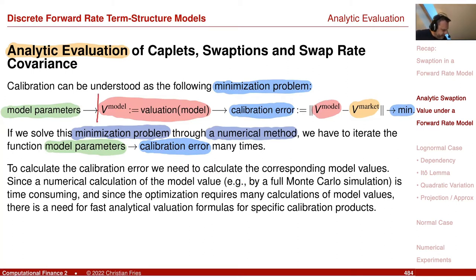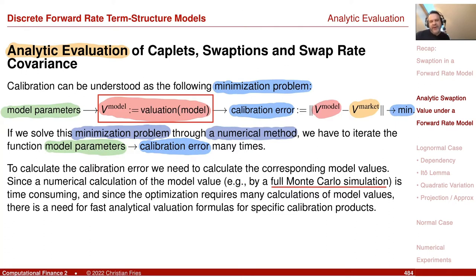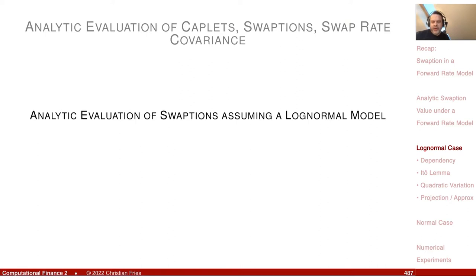If you perform this minimization through a numerical method — gradient descent or similar — you iterate often through this function and call it very often. So you want this function to execute fast. The slow part is the evaluation of the model value, for example by a full Monte Carlo simulation with 10,000 or 50,000 sample paths — that's expensive. So I'd like to have an analytic formula to make it fast.